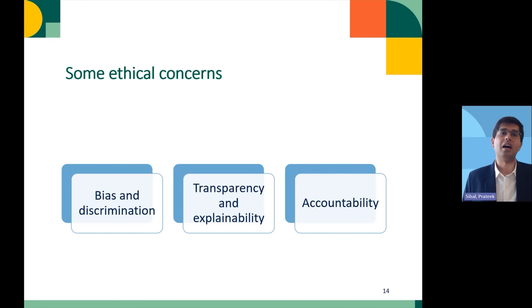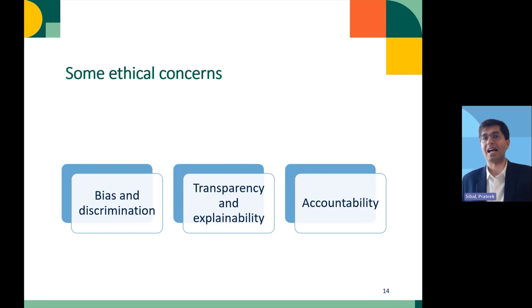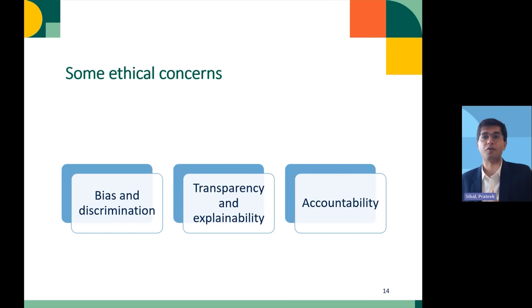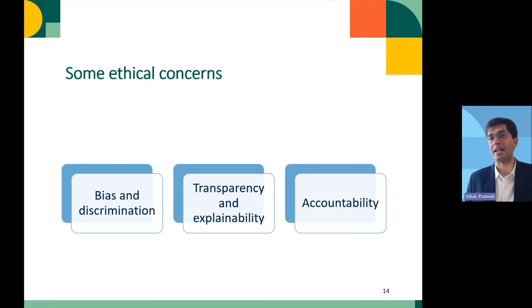As an example, a big tech company was using an AI system as part of its hiring process to screen CVs. However, this system was trained on past CVs, and as it happened, the company had been selecting more men than women. So the AI system learned that the more successful attributes in a CV are found in those of men. As a result, the hiring algorithm was downgrading the CVs of women — a clear example of how real-world bias is reflected in an AI system based on a biased dataset.